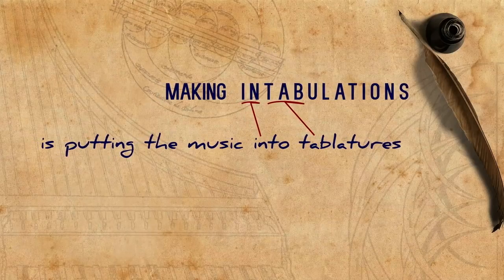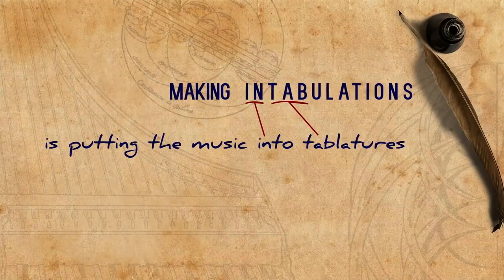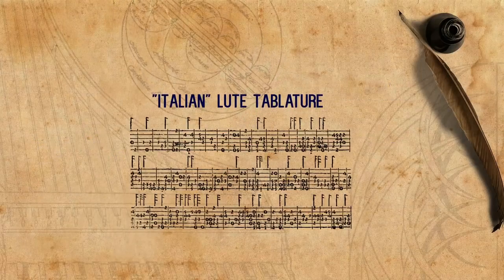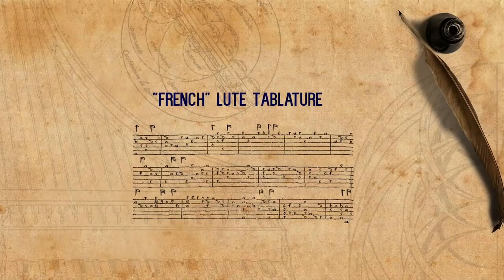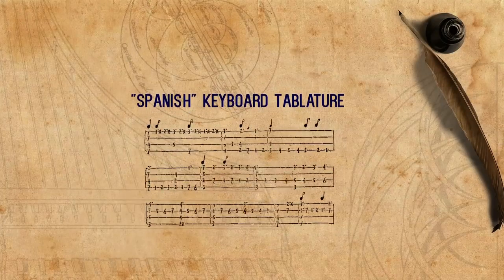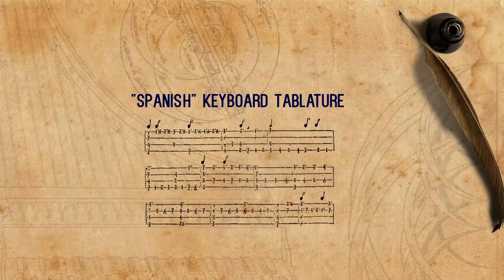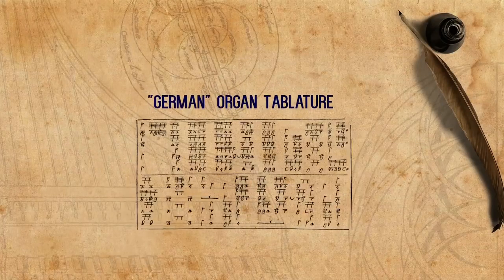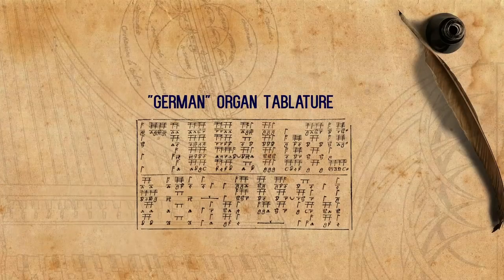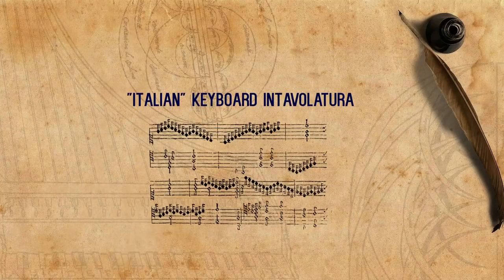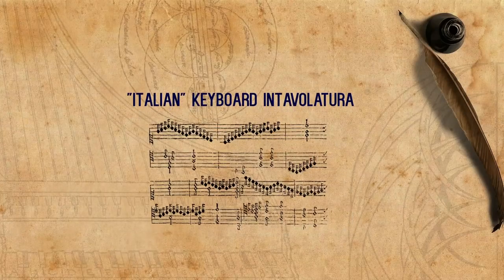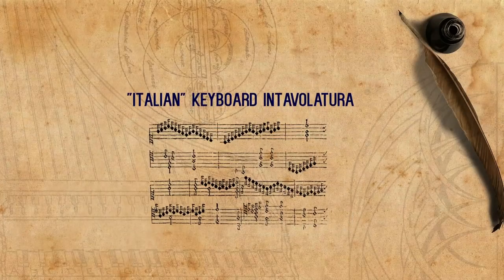There are different kinds of tablatures, such as the Italian Lute Tablature, the French Lute Tablature, the Spanish keyboard tablature, the German one, and of course the Italian one, which developed into the modern keyboard notation.